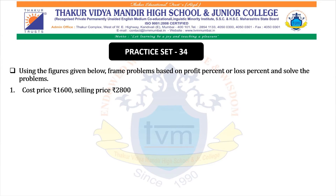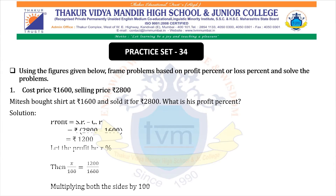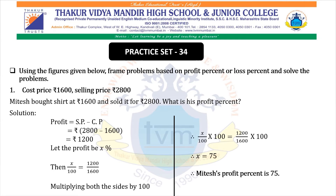First, cost price is Rs. 1600 and selling price is Rs. 2800. The problem is: Mitesh bought a shirt at Rs. 1600 and sold it for Rs. 2800. What is his profit percent? Solution: Profit = SP − CP = 2800 − 1600 = Rs. 1200. Let the profit percent be X. Then X/100 = 1200/1600. Multiplying both sides by 100, X = 75. So Mitesh's profit percent is 75.